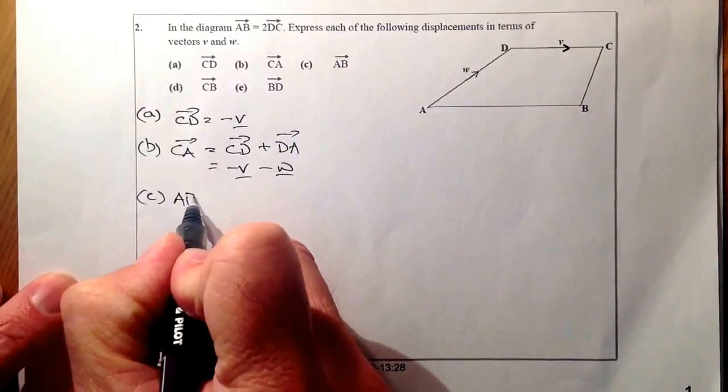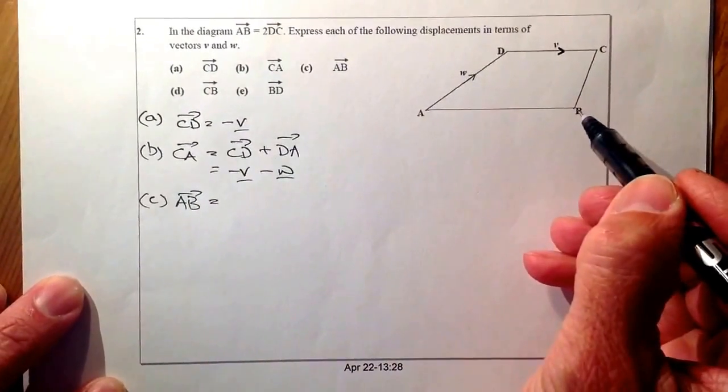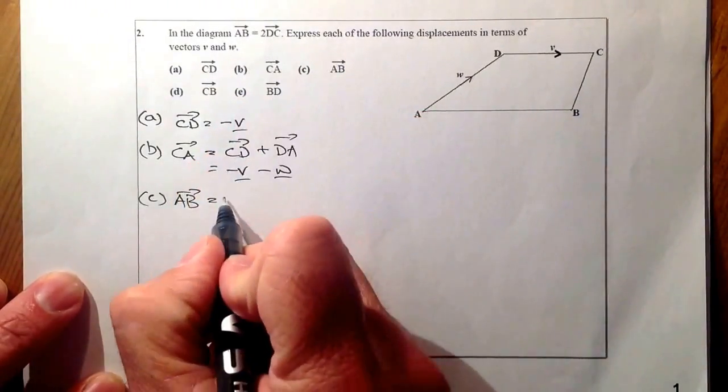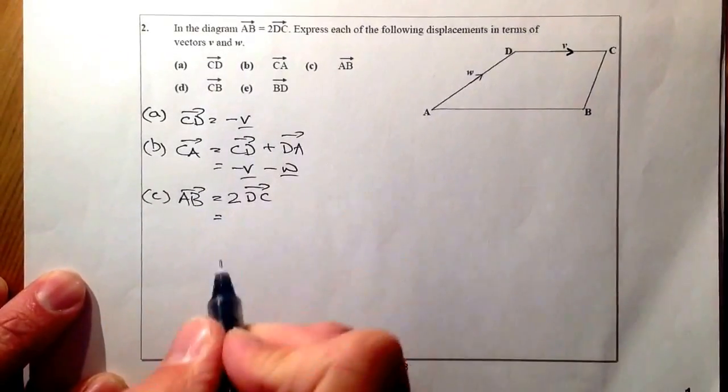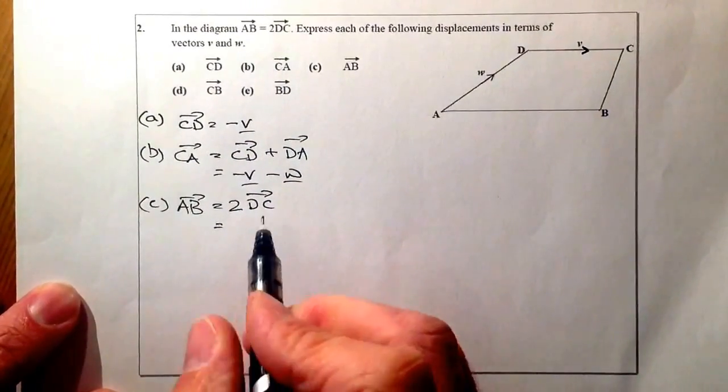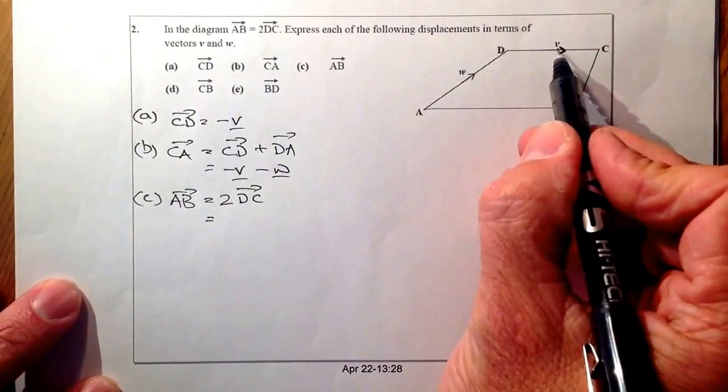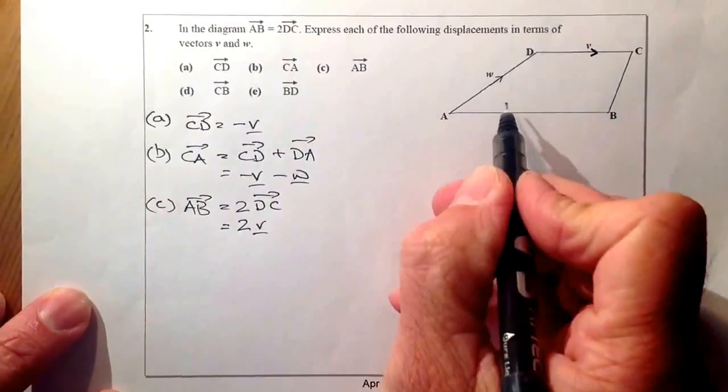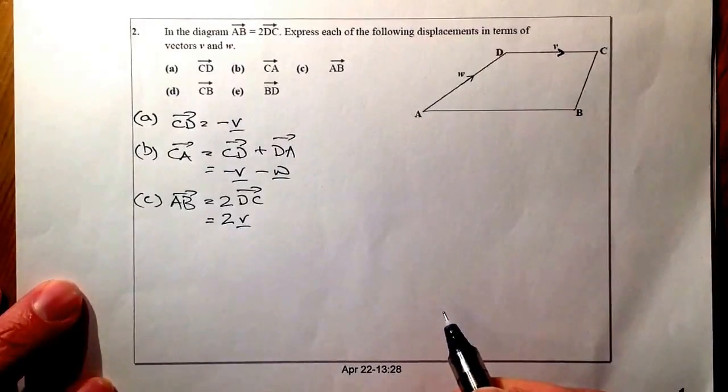Part C, we're looking at A to B. So what I do know is that vector AB is equal to 2 times DC. And what I could have done is I could have changed the vector diagram by writing that in. So it's going to be 2 times DC. So the vector DC is equal to V, so that's going to be 2 times V. They're going in the same direction, so it's going to be positive. So that's just 2V.